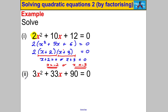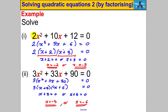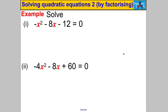Pause and try the next one yourself. I would factorize out a 3 to get x² + 11x + 30 = 0, keep the 3 there, then factorize the bracket to get (X + 5)(X + 6) = 0. Either X + 5 = 0 or X + 6 = 0. Subtracting 5 gives X = negative 5, and subtracting 6 gives X = negative 6. Done.